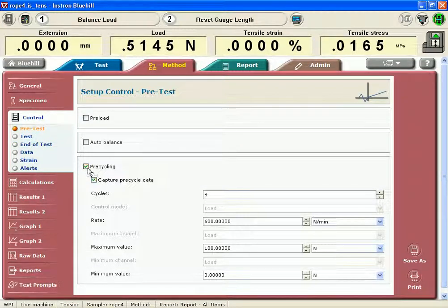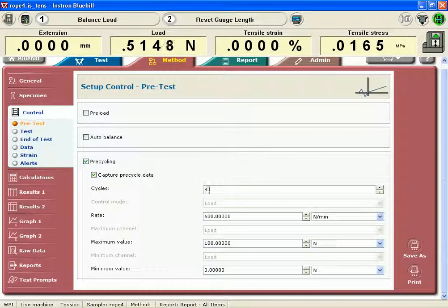And a pre-testing with pre-cycling at 8 cycles at a rate of 600 newtons per minute, under load control, going to a maximum of 100 newtons and a minimum value of 0 newtons.